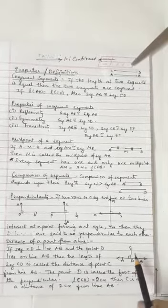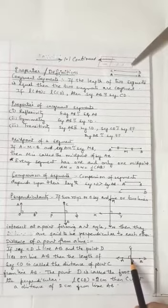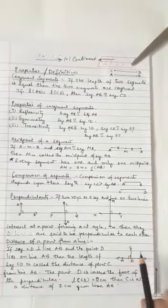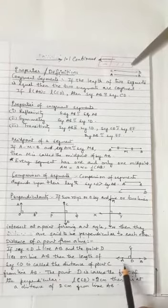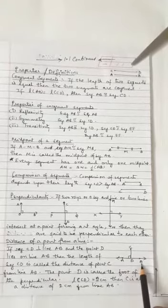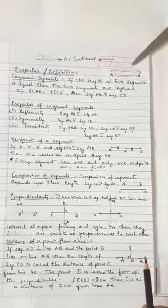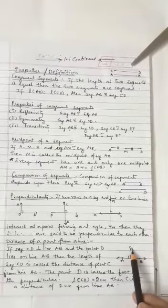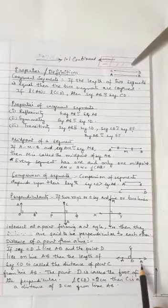When we measure the length of segment CD, that length gives the distance of point C from the line AB.